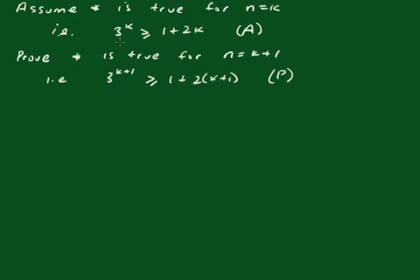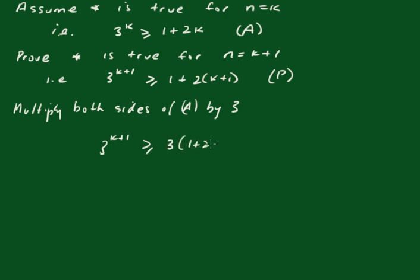Now I'm going to make the left hand side of A the same as the left hand side of P. So to do that we'll multiply both sides of A by 3. So now we're going to get 3 to the k plus 1 is greater than or equal to 3 times 1 plus 2k.